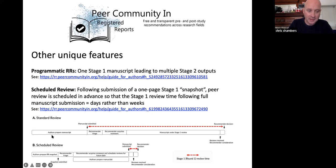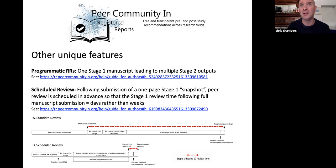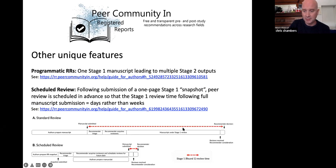Here's what I mean. In the standard review track — panel A — authors prepare a full manuscript, it goes to a recommender for triage, then the recommender acquires reviewers, which can take a lot of time since the review system is heavily overloaded, and then it goes under stage one review which can take months. This red arrow represents the total stage one review time. With scheduled review, key parts of this process are performed in parallel.